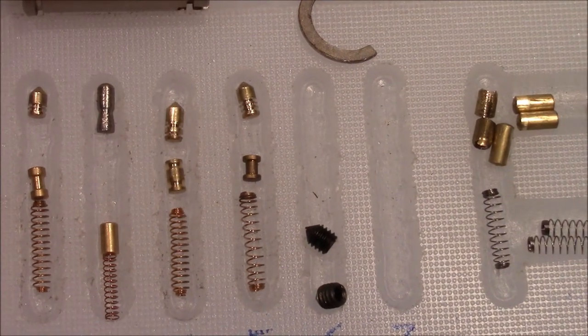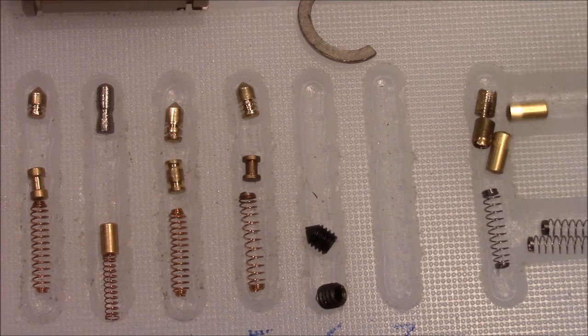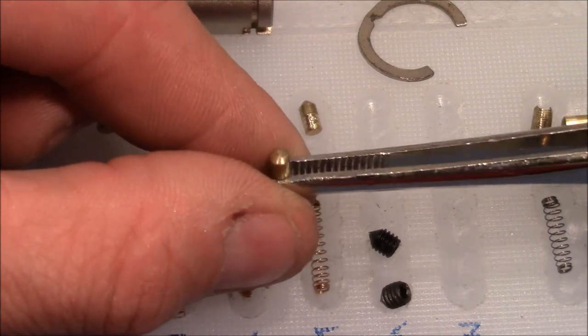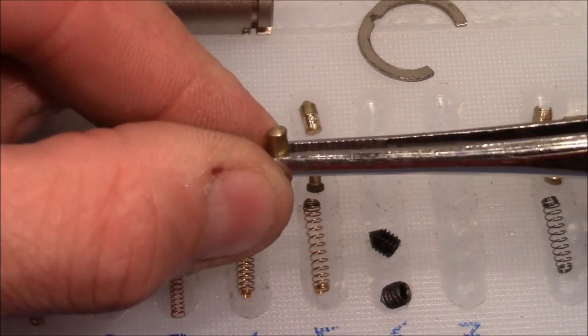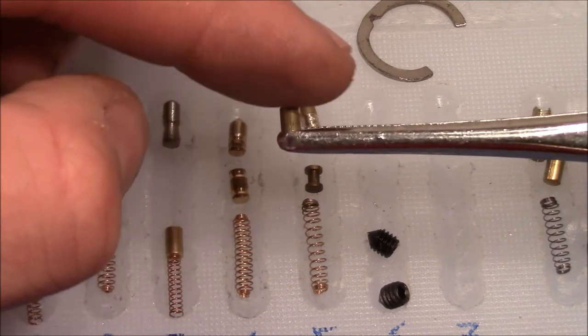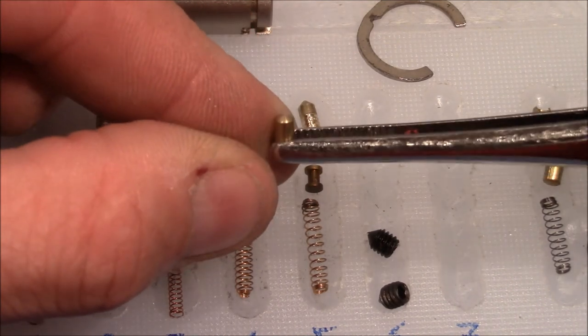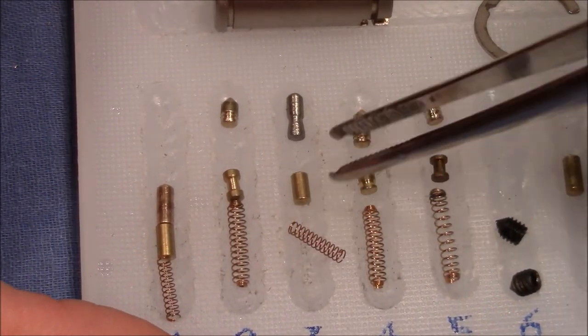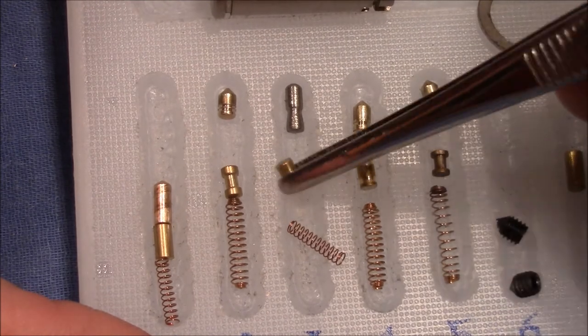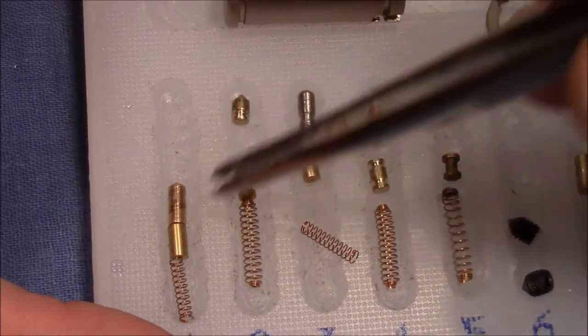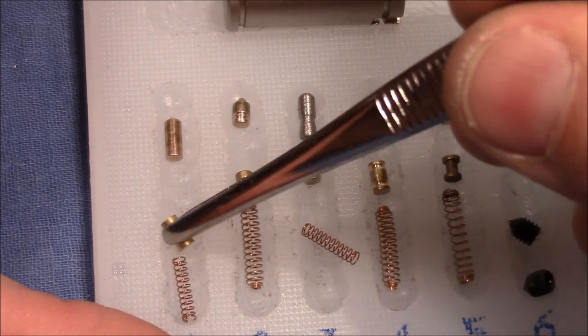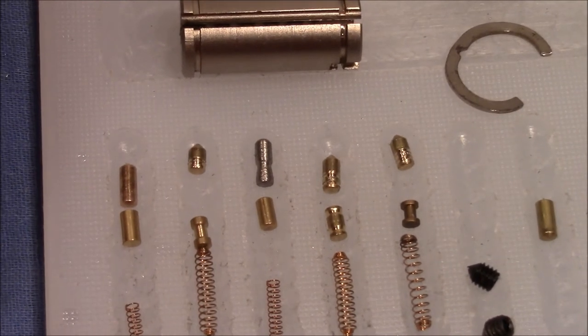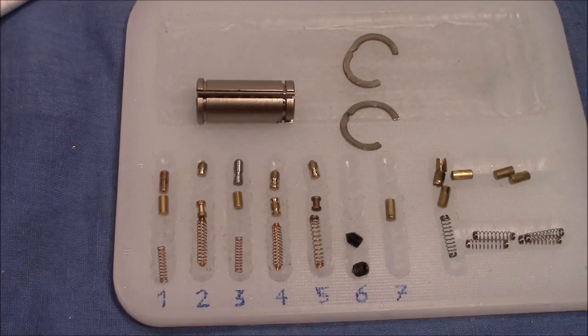Before I reassemble the lock, let me show you. These are the initial or original driver pins. You can see that they are round on both ends. I've therefore chosen to exchange them by other drivers which are flat, which is much better regarding picking resistance. So everything is complete. I will reassemble the lock and make a final test with the key.